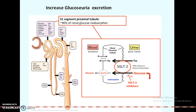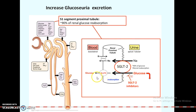Another mechanism is increasing the excretion of glucose from the kidney, which reduces blood sugar levels. The major site where glucose is reabsorbed is the proximal convoluted tubule, where 90 percent of renal glucose reabsorption occurs. When sodium-glucose co-transporters are inhibited in the proximal tubule, reabsorption is reduced, leading to excess glucose in the urine — excreted via the GLUT2 transporters. This is the major mechanism of sodium-glucose co-transporter inhibitors.